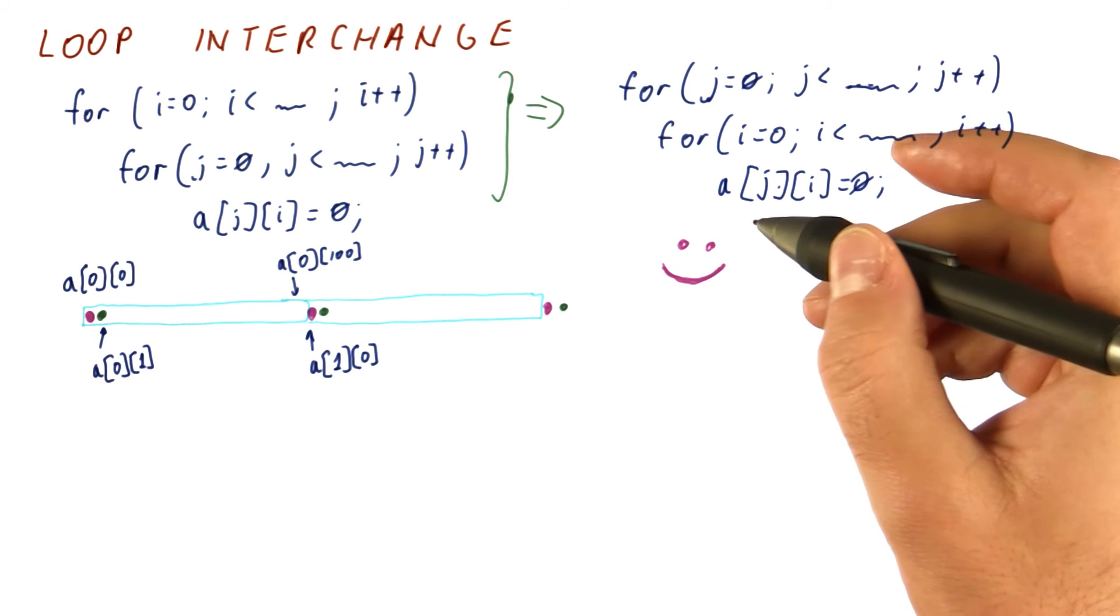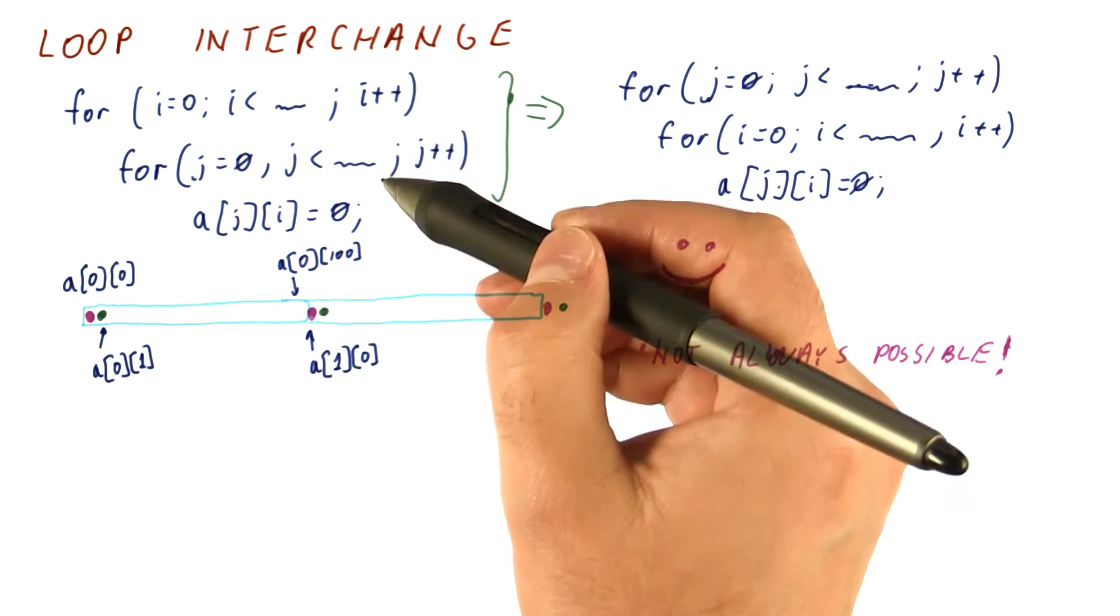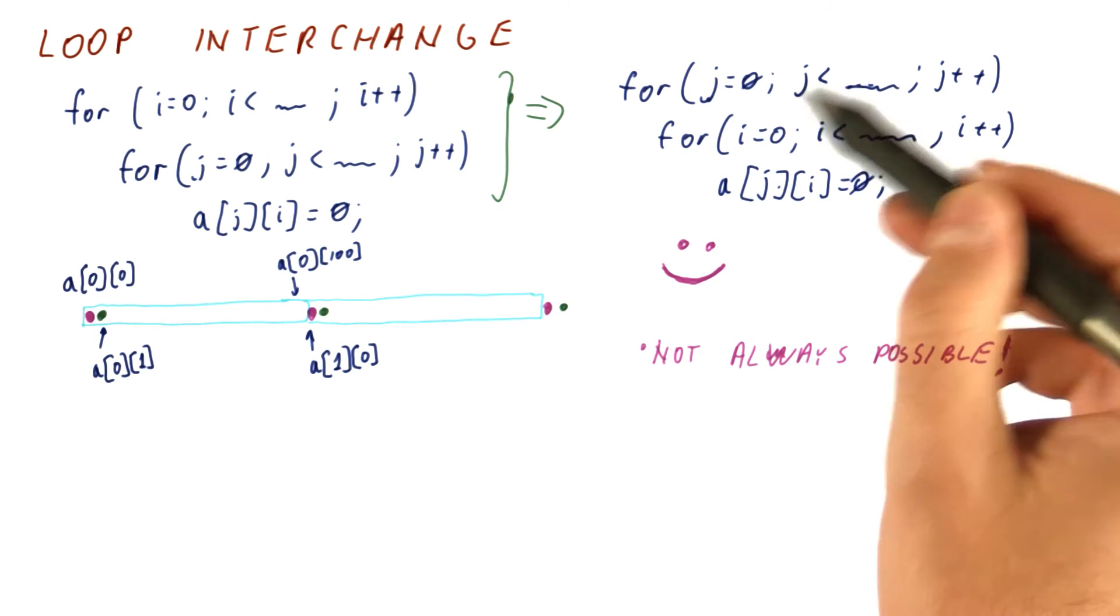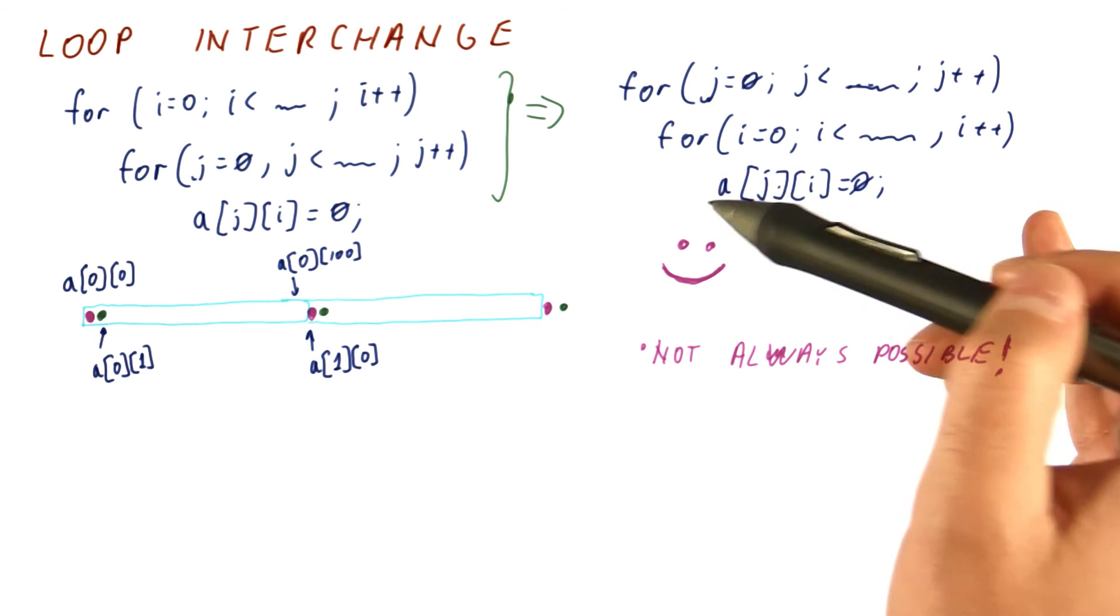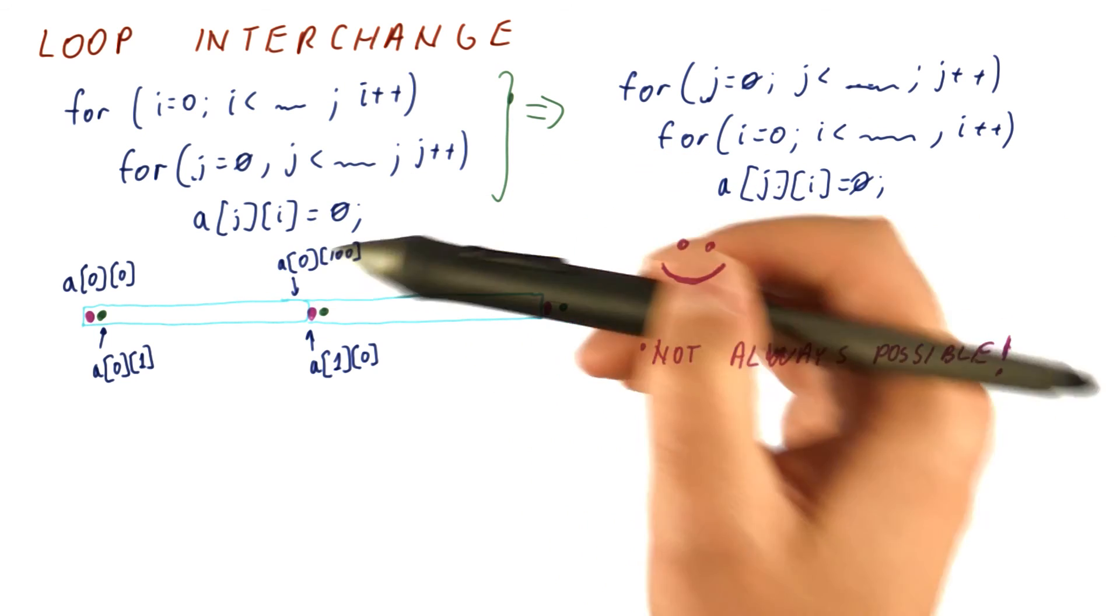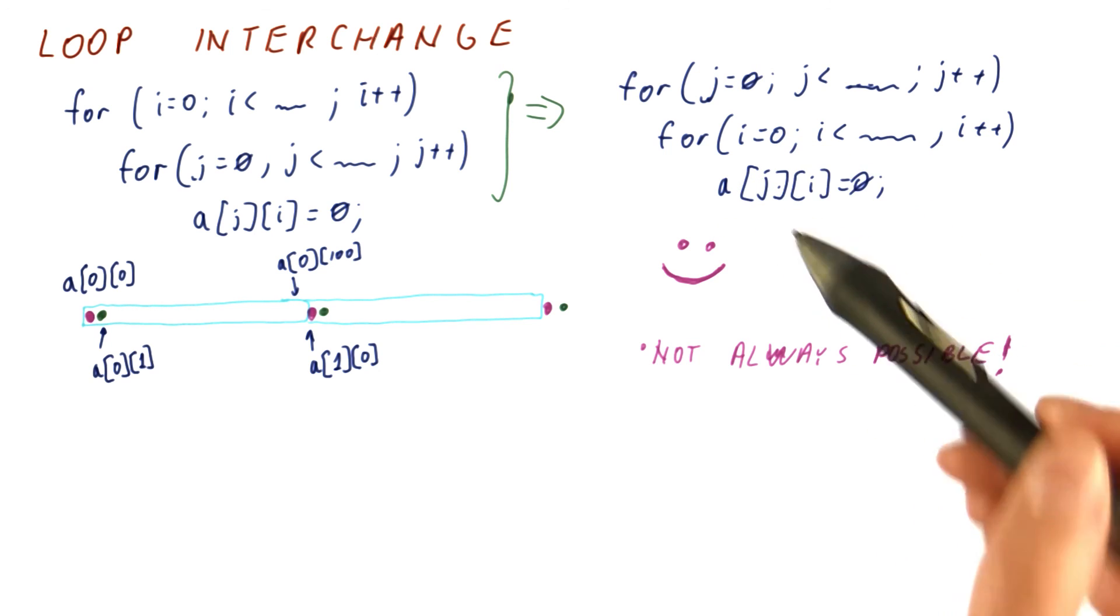It dramatically improves the hit rate that we're getting, but it is not always possible. You cannot just take any two nested loops and transform them this way. The compiler has to prove that this code and this code are equivalent, which it does by proving that there are no dependencies between iterations of these loops.